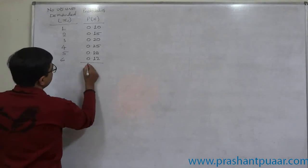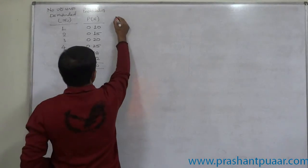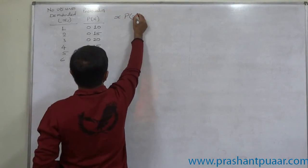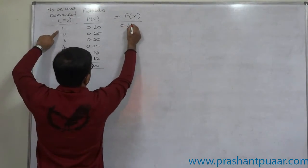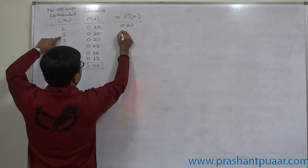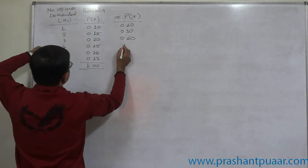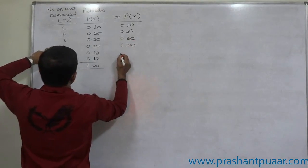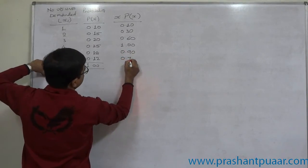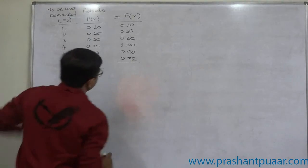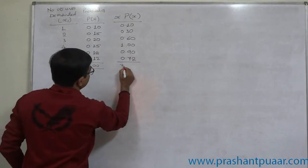First of all, we are going to calculate the expected value, or mathematical expectation, or the mean. For that purpose, we need a new column x into P(x). 1 into 0.1 remains 0.1, 2 into 0.15 is 0.3, 3 into 0.2 is 0.6, 4 into 0.25 is 1, 5 into 0.18 is 0.9, and 6 into 0.12 is 0.72. The summation comes to 3.62.